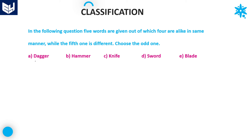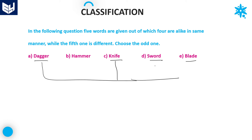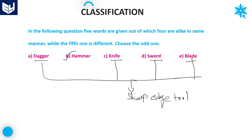Last question. The options are: dagger, hammer, knife, sword, and blade. If you observe carefully — blade, sword, knife, and dagger — these four are sharp edge tools. But hammer is not a sharp edge tool; it is different from the remaining four. So hammer is the right answer for this question. The logic applied is: except hammer, the remaining four are sharp edge tools. Therefore, our required answer is hammer — option B.